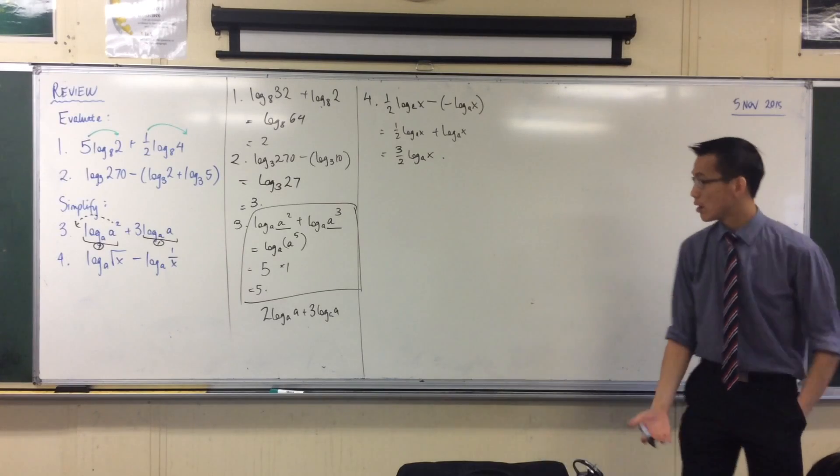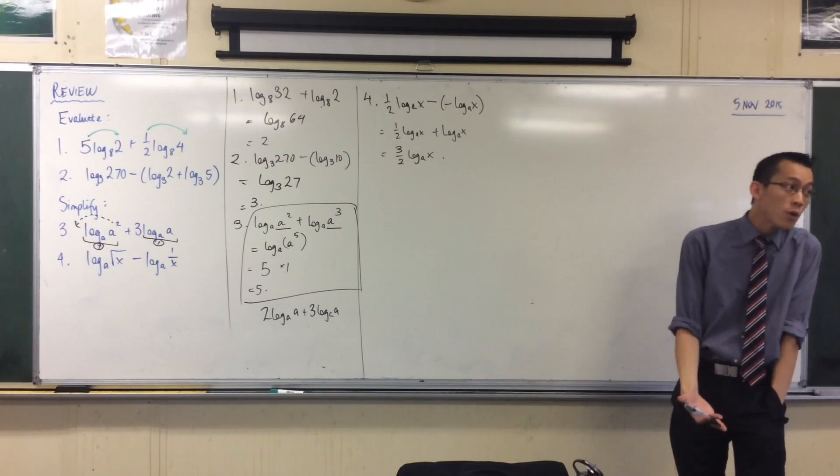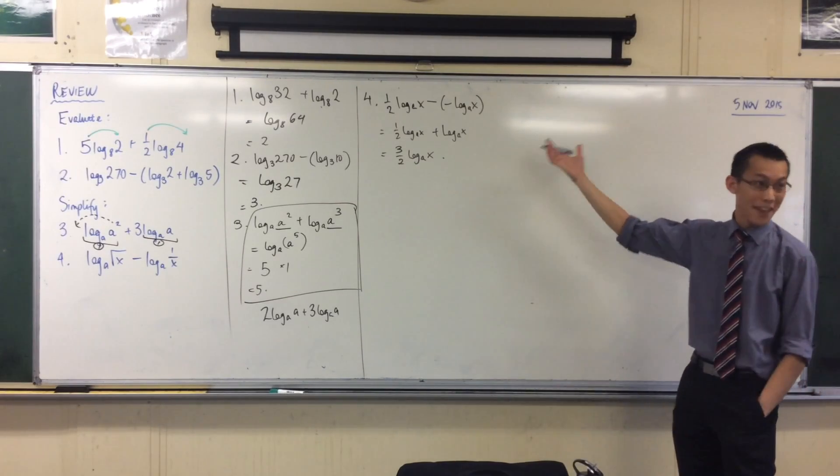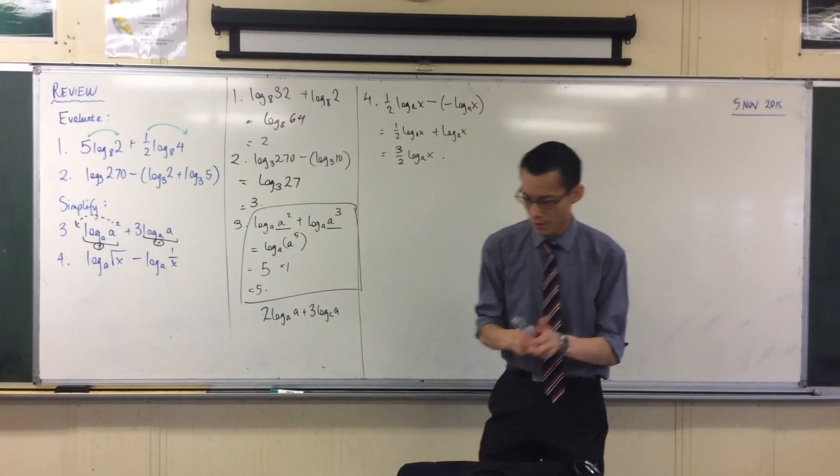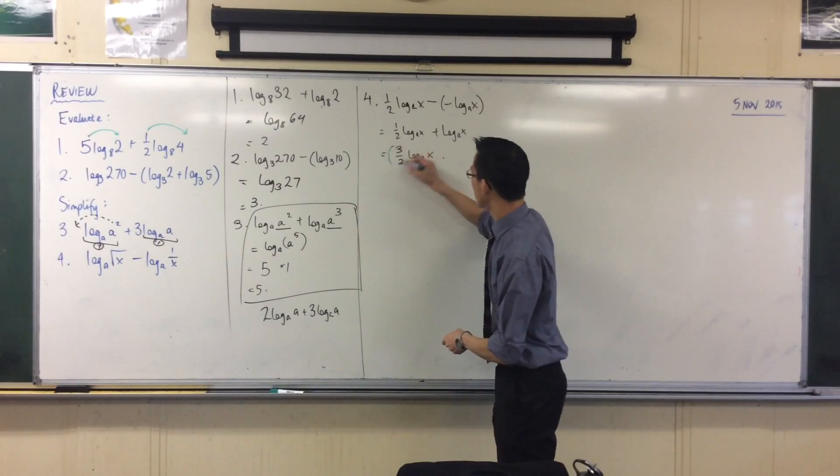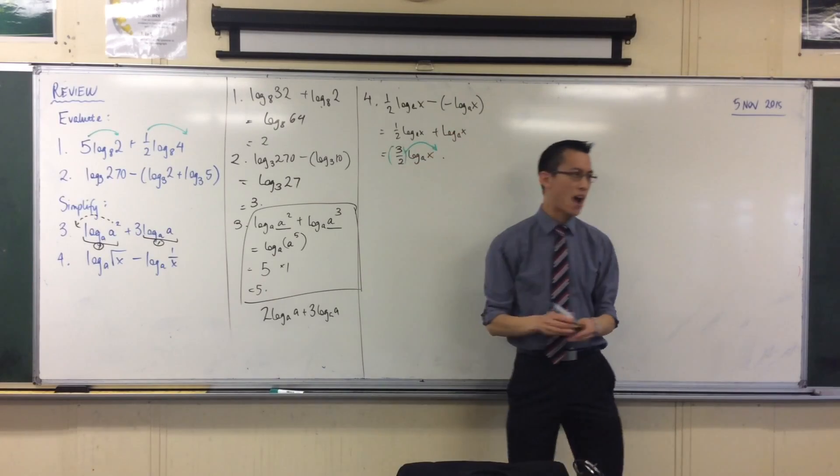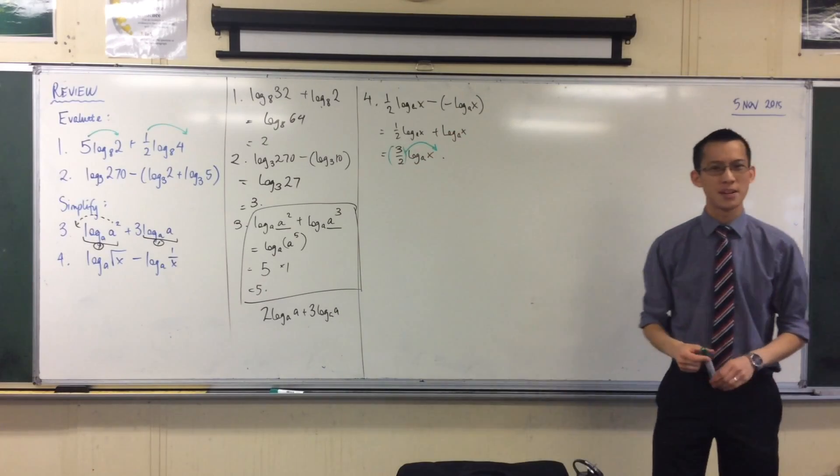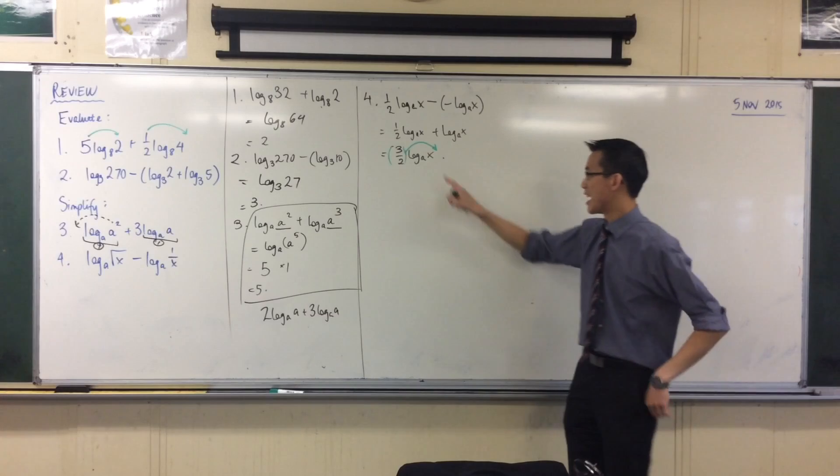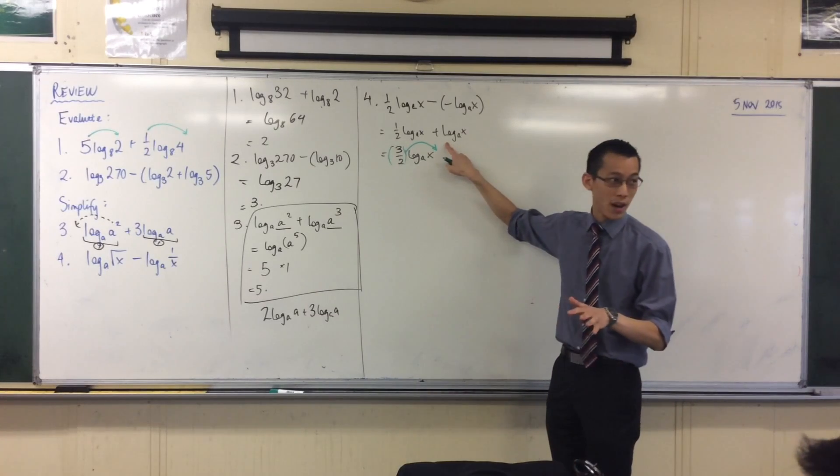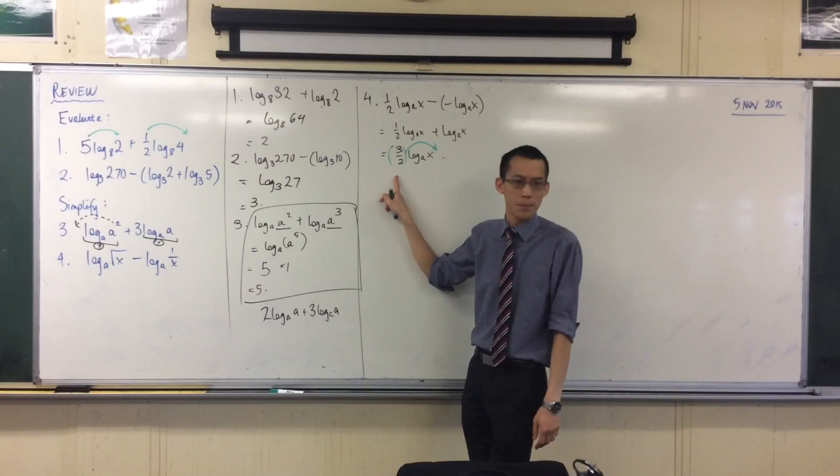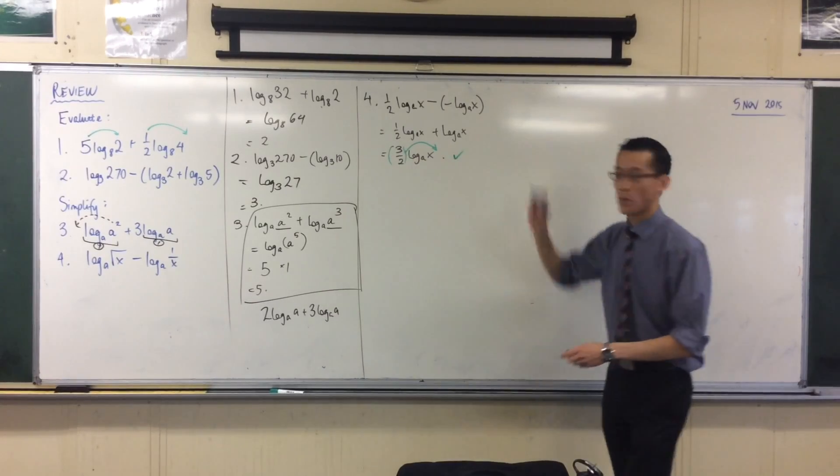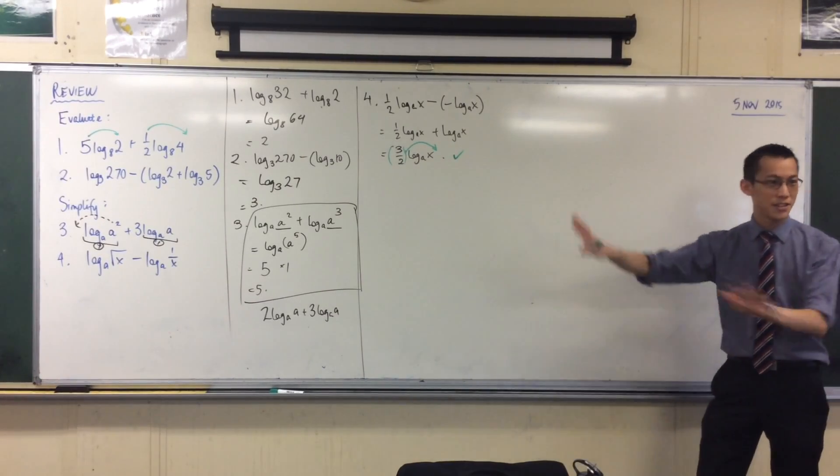Now at this point I'm kind of done. Like I don't know what log base A of X is. They don't give me any values. I could, I suppose, I could put this up here in the power, but I think you'd be hard-pressed to find someone who would say it's simpler to have something raised to some weirdo-looking power versus just multiply by a number. I can multiply by a number. So I think at this point we're finished. Alright? Any questions on those?